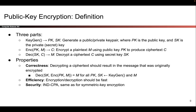More formally, we can define public key encryption as three different functions that you have to implement. First, you have to describe how the key pairs are generated — if somebody wants a public-private key pair, what algorithm do you use to generate those keys? Here, we're using SK to represent the secret key, because public and private start with the same letter, so we use SK for secret key.